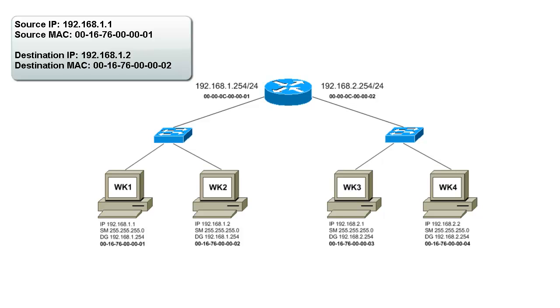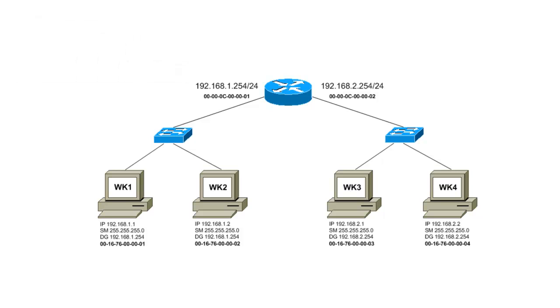When Workstation 2 receives this directed packet, it sees that the packet has its MAC address, so it brings it up into the operating system and processes the request. Workstation 1 and Workstation 2 can continue to communicate in this fashion.